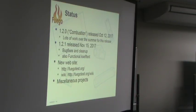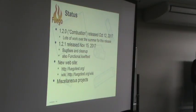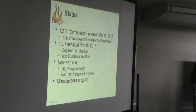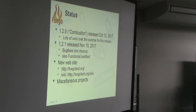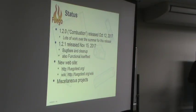The 1.2.0 release is nicknamed Combustion — like everything in Linux, we use alphabetical names, so we're on our C release; the last one was Blaze. It was released October 12th, with a lot of work over the summer. About a month later, we followed up with 1.2.1 on November 15th, which includes bug fixes, cleanup, and a functional kernel self-test. We also have a new website, fuego-test.org — we'd been living on bird.org, my personal domain, but now we have our own domain. The wiki has been moved over to that website as well.